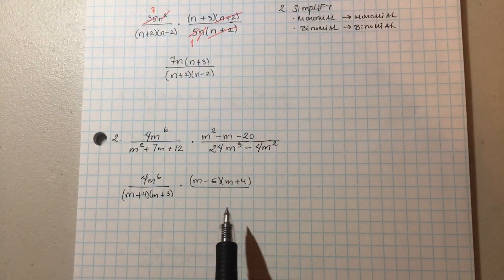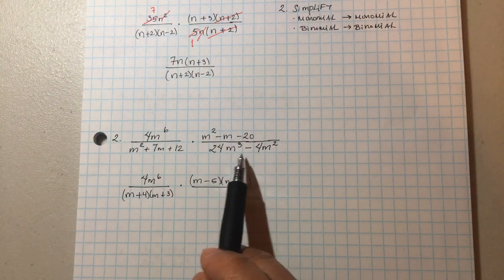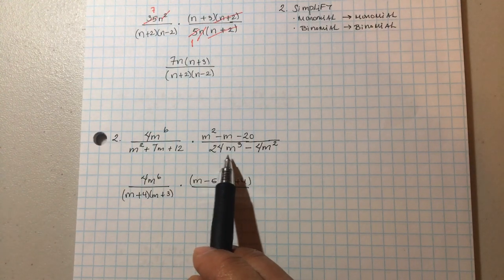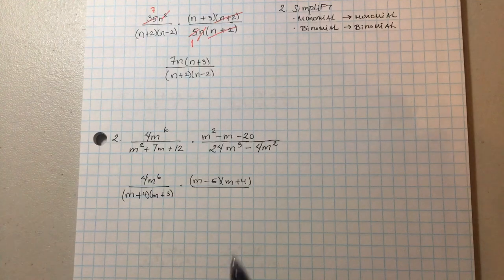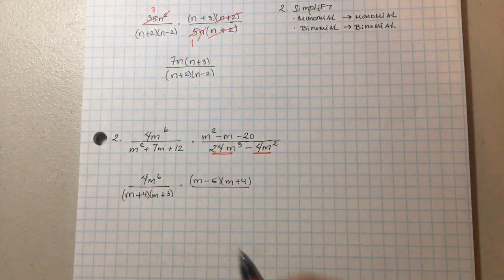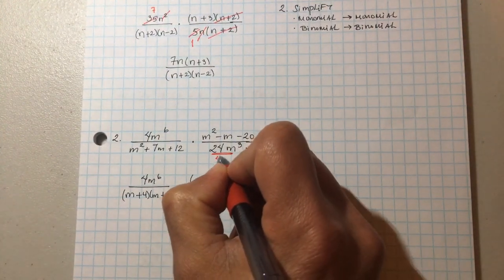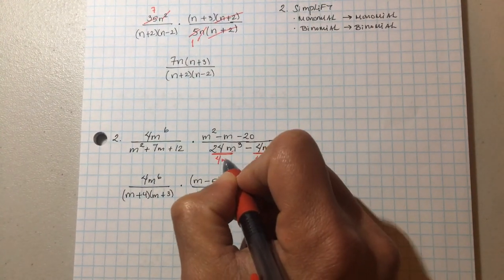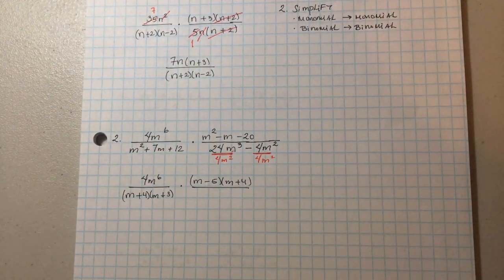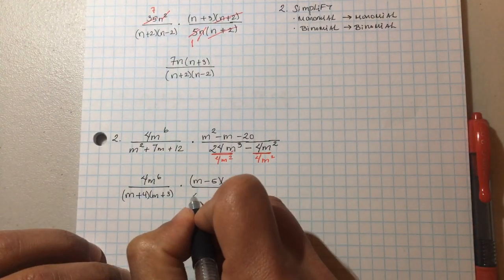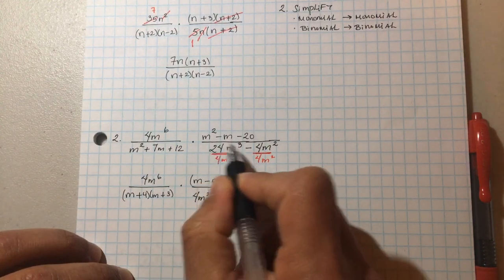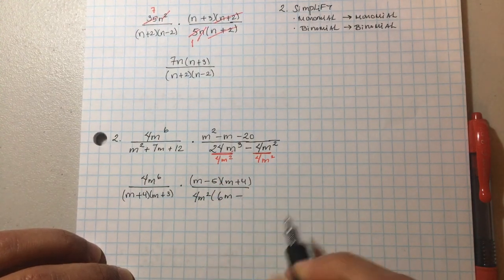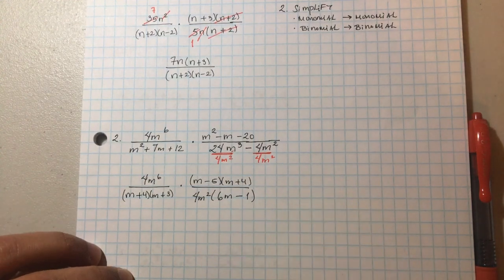Now for this expression, remember the first rule: is there a common factor? Yes — four and m squared. We factor out 4m squared. Then 24 divided by four is six, m cubed over m squared is m, and 4m squared divided by 4m squared gives you one. So we factor out 4m squared and get 6m minus one inside.